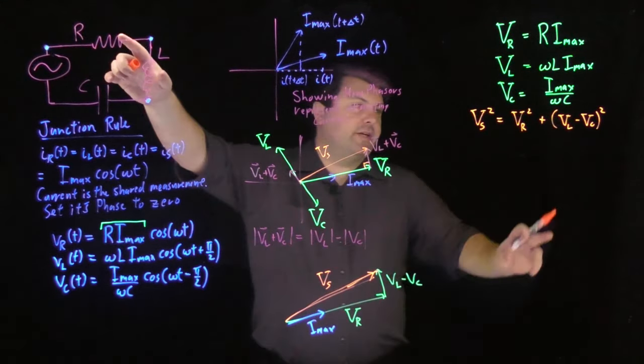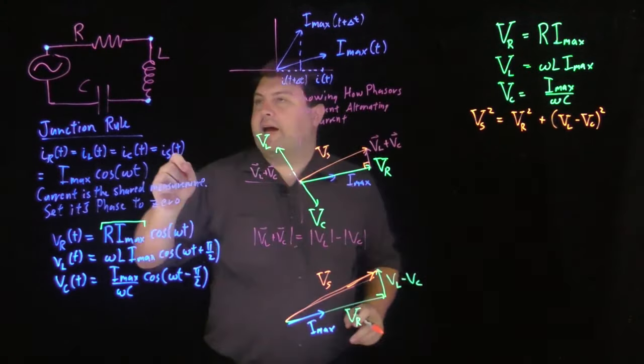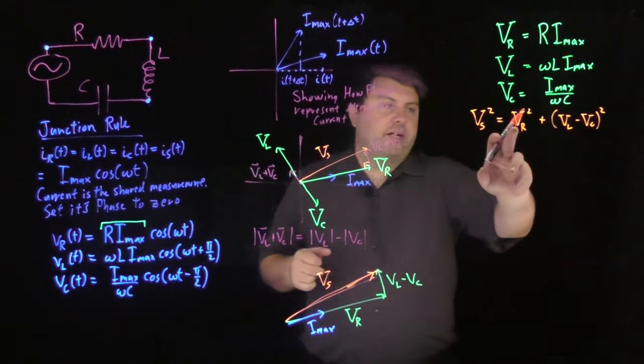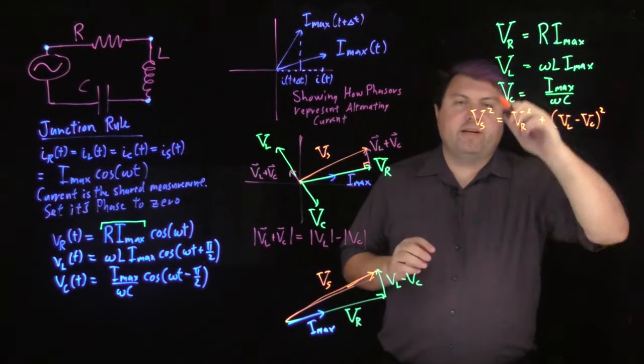So if we have just an RL circuit, this V sub C is 0. If we have just an RC circuit, V sub L is 0. If we have just an LC circuit, V sub R is 0. So just to avoid any cancellations over here.